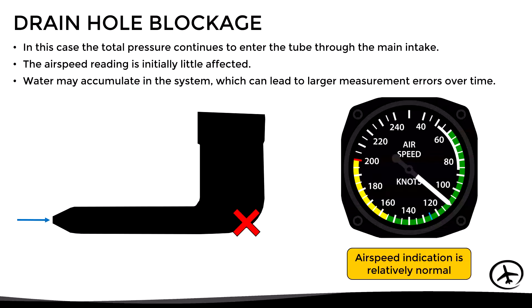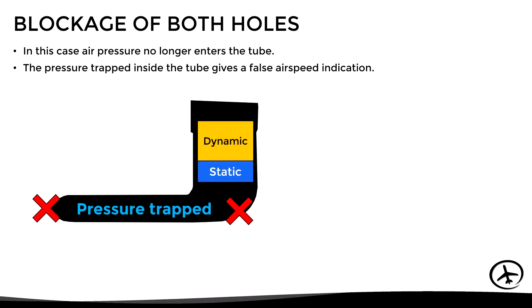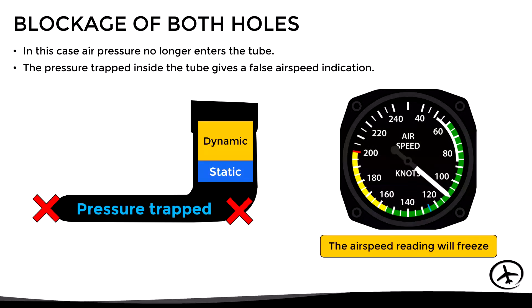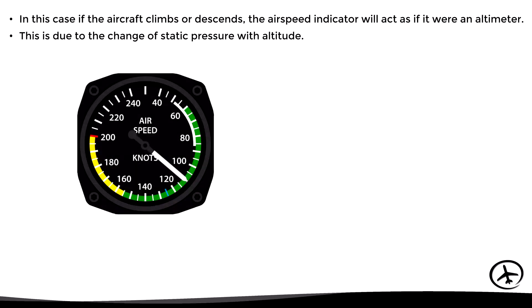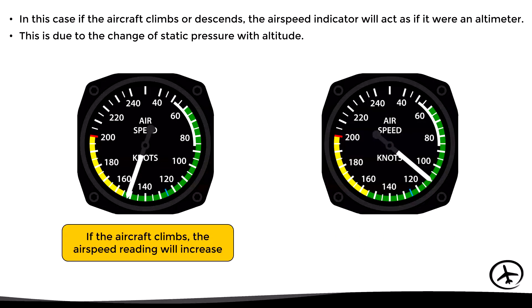In the third case, both holes are blocked. The total pressure can no longer enter the tube, and the pressure inside cannot escape either. The pressure trapped inside will give a false airspeed reading. As long as the aircraft maintains altitude, the airspeed indicator will freeze, indicating the last speed measured before the blockage. If the aircraft climbs, the airspeed reading will increase; if the aircraft descends, the indication will decrease.